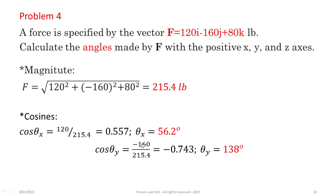The direction cosine along Y is 0.743, so theta y equals cos inverse of 0.743, which gives approximately 0.430. The angle from the positive Y-axis to F is 130 degrees.